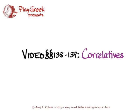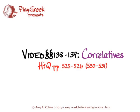This video covers the material in sections 138 and 139 of Hanson and Quinn's Greek Intensive Course. I'm going to group that material together and call this video Correlatives. I'm going to add to what Hanson and Quinn has in those sections. Those two sections are on pages 525 to 526, but they also point you to a full spread chart on pages 530 to 531, and I'm going to be covering the material in that as well.